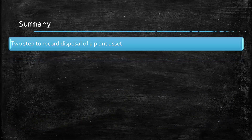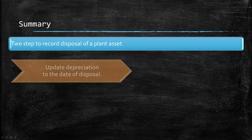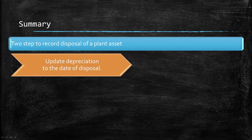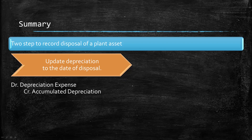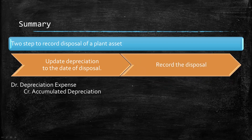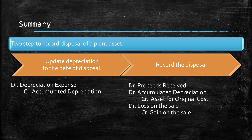In summary, there's a two-step process for disposing of plant assets. The first step is to update depreciation all the way to the day of disposal, with a debit to depreciation expense and a credit to accumulated depreciation. Then record the disposal itself: debit cash for the proceeds received, debit accumulated depreciation to eliminate it, and credit the asset for its original cost. Finally, either debit a loss on sale or credit a gain — never both in the same journal entry.